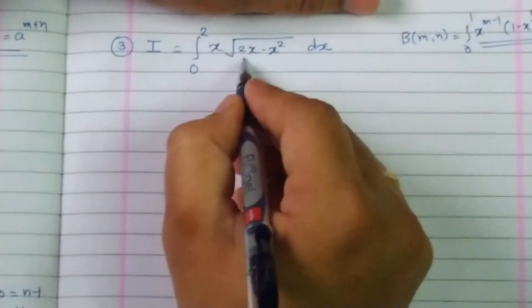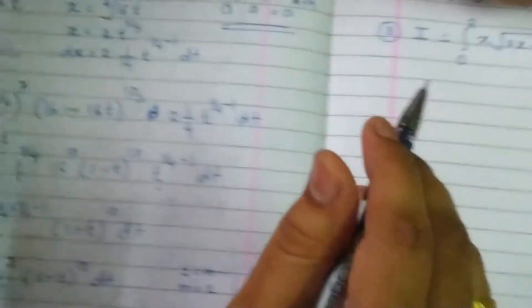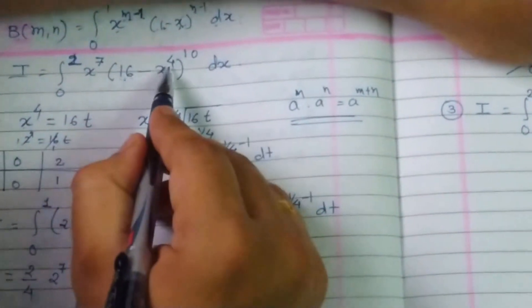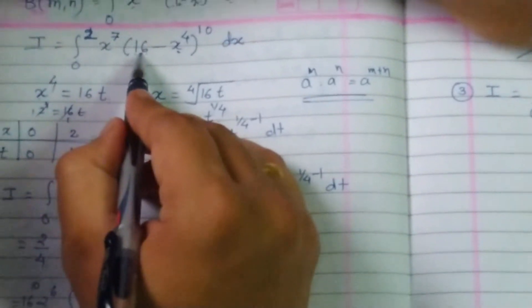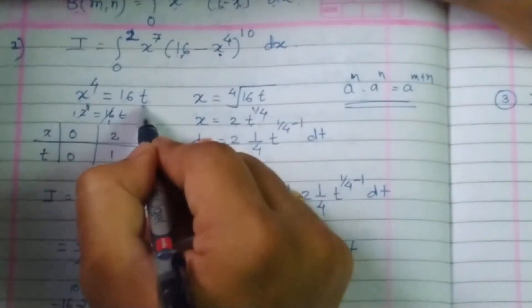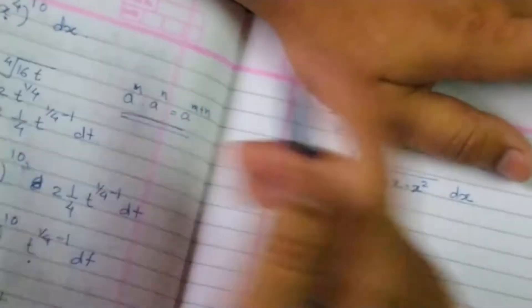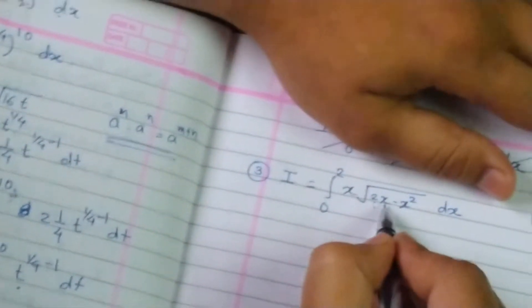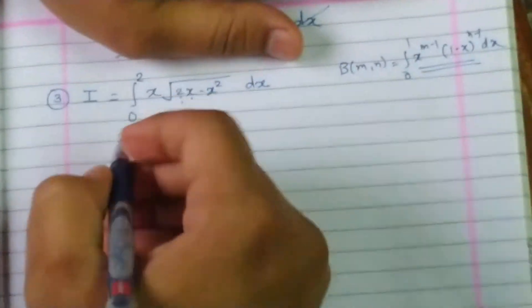Now compare this example with here. In the previous example, the question was 16 minus x raise to 4. 16 is the only number present. So whatever substitution we made was in multiples of 16. But now you see with the constant there is a variable x. What to do?